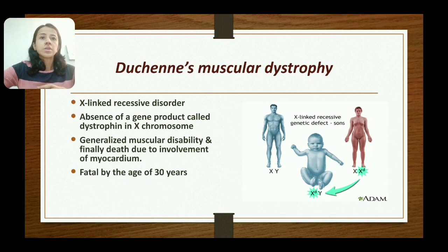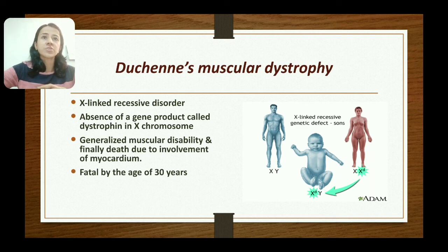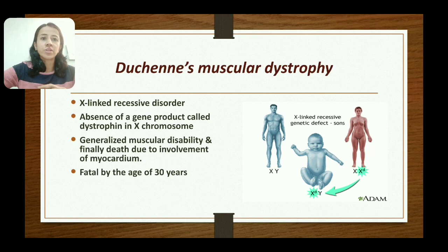Duchenne muscular dystrophy is an X-linked recessive disorder in which dystrophin is absent from the muscle. It is due to absence of the gene product dystrophin, which is present on the X chromosome, and it manifests as generalized muscle disability. Finally, it results in death when the myocardium and respiratory muscles are involved.